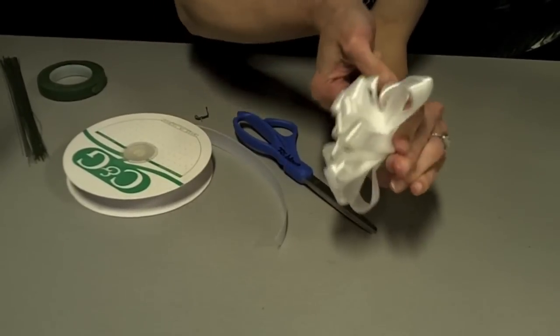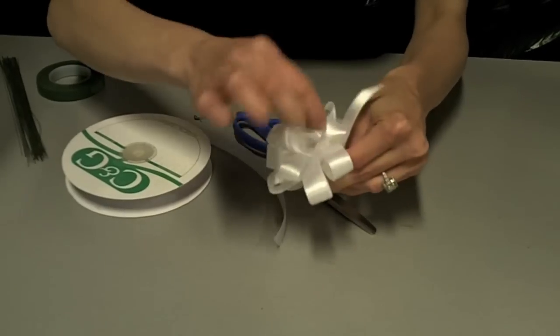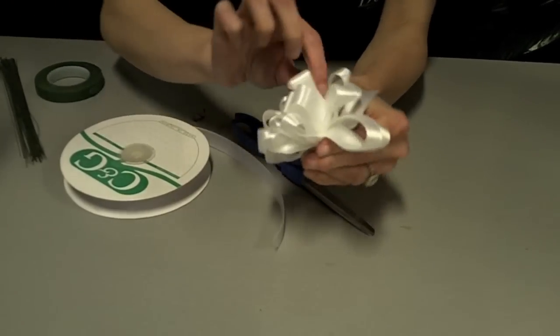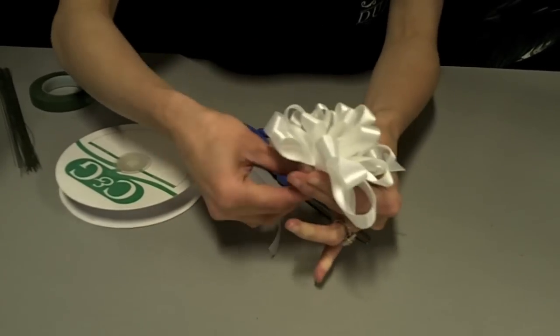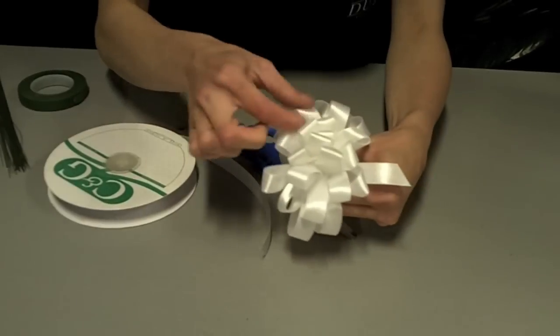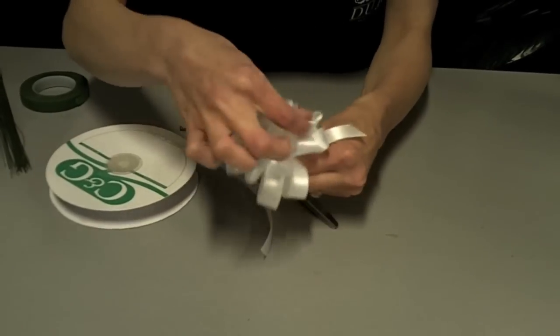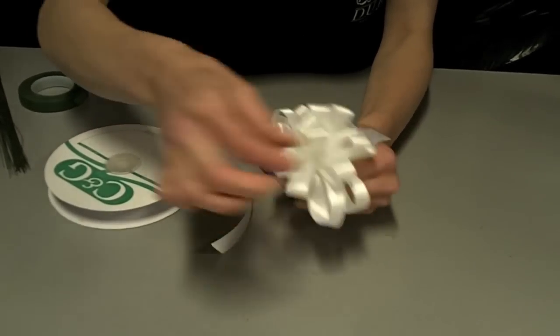So now you can fluff your bow out to the shape that you want and position your loops to where you want them. And this is a basic corsage bow that we make on a daily basis.